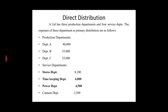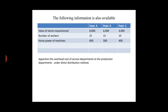The following information is also available: value of stores requisition, number of workers, and horsepower of machines for departments A, B, and C. Apportion the overhead cost of service departments to production departments under the direct distribution method.